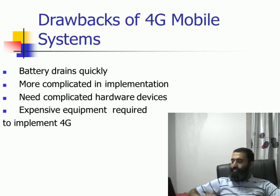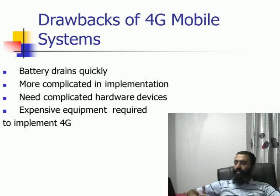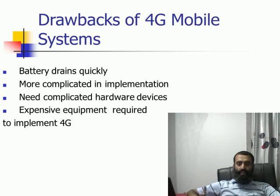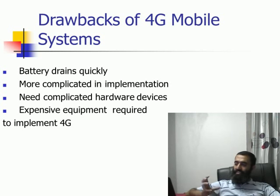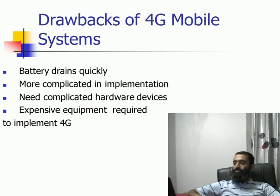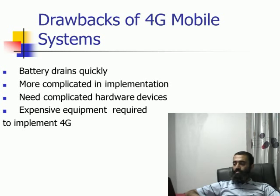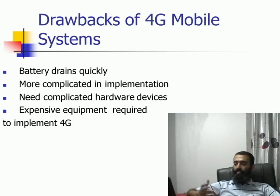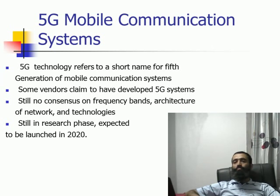With every system there are also drawbacks to 4G systems: the battery drains out very quickly, and the advanced receivers are more complicated to implement in hardware, which is why the price of mobile phones goes up. Similarly, the network equipment for 4G is more expensive as the hardware implementation of all these advanced technologies is more complicated.